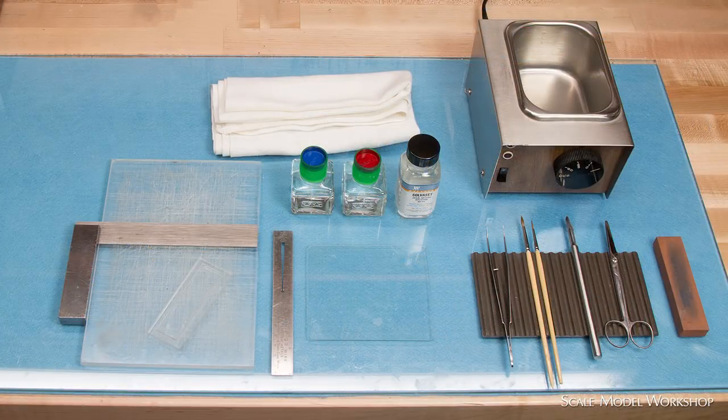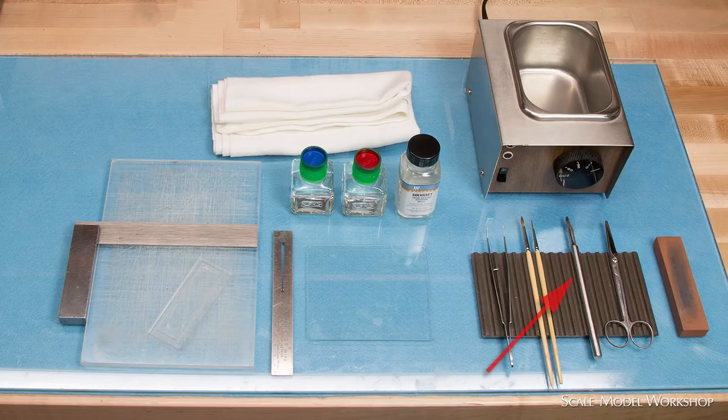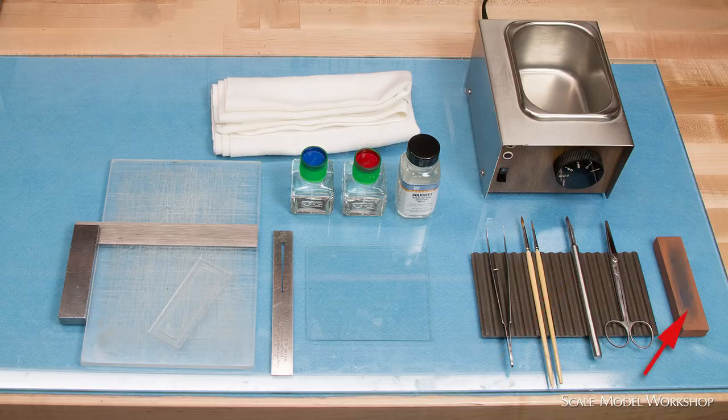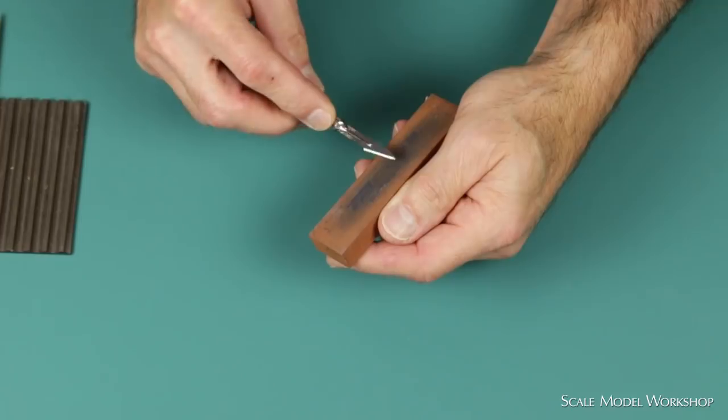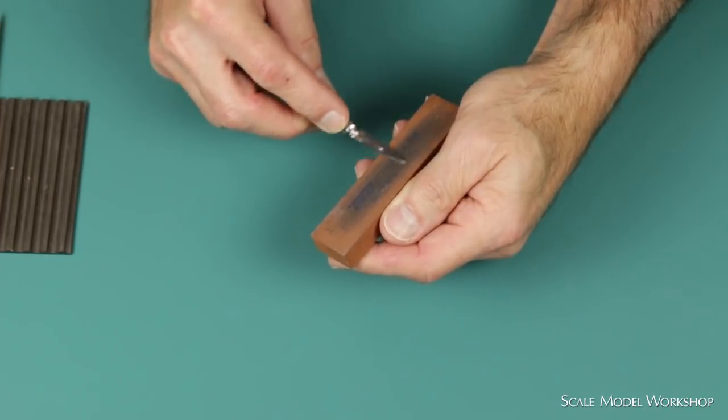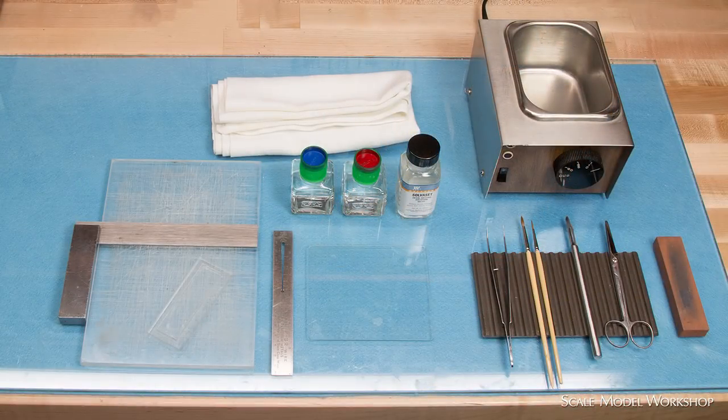These are the tools that I use when working with decals. First off is an extremely sharp knife, as well as a stone to keep the edge keen. The blade needs to be as sharp as possible. A dull blade will raise the edges of the decal and make them difficult to settle down.